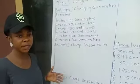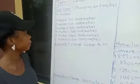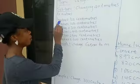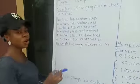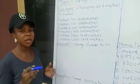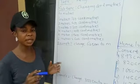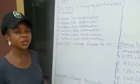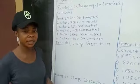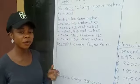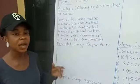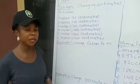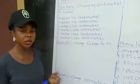We want to change from centimeters to meters. Let's know this: 1 meter is equal to 100 centimeters. 2 meters is equal to 200 centimeters. 3 meters is equal to 300 centimeters. 4 meters is equal to 400 centimeters. 5 meters is equal to 500 centimeters. 6 meters is equal to 600 centimeters.